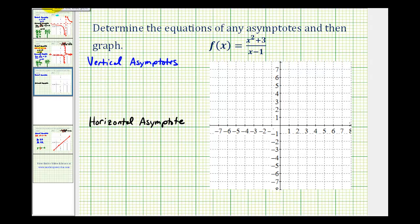We're going to determine the equations of any asymptotes and then graph the given function. Let's start by determining the vertical asymptotes. Remember, before determining any vertical asymptotes, we want to see if the numerator and denominator have any common factors. X squared plus three does not factor, so we will have a vertical asymptote at the zero of the denominator. The vertical asymptote will occur where x minus one equals zero, so the equation for the vertical asymptote will be x equals one. Let's go ahead and sketch that. Here it is.